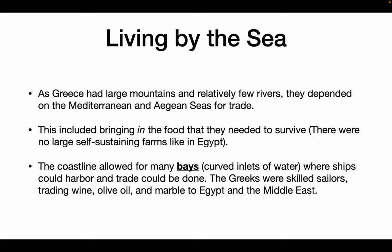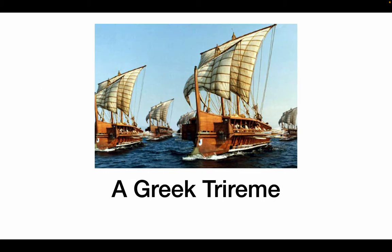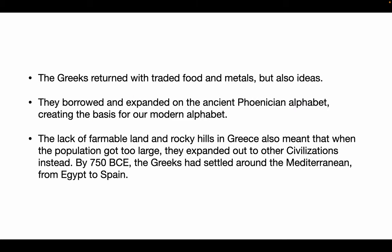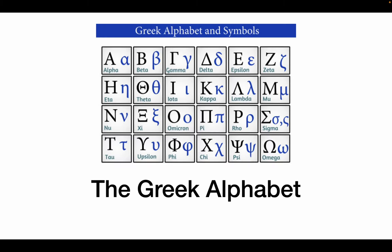They traded wine, olive oil, and marble for things like wheat and other local delicacies. This is a Greek ship called a trireme. The Greeks returned with food and metal, but as we've seen, people do not trade just goods — they trade ideas along with it, and philosophies and religions. They borrowed the Phoenician alphabet to create their own Greek alphabet. The lack of farmable land also meant that when the population got too large, they tended to expand. By 750 BCE, they had expanded all the way into Egypt and into Spain.